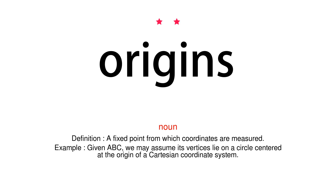Noun. Definition: A fixed point from which coordinates are measured. Example: Given ABC, we may assume its vertices lie on a circle centered at the origin of a Cartesian coordinate system.